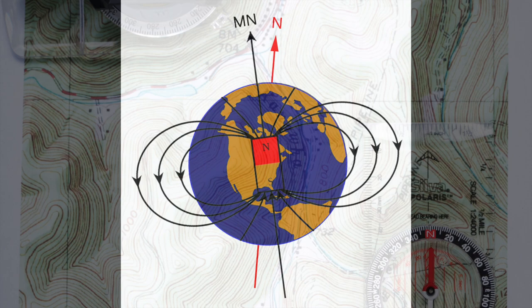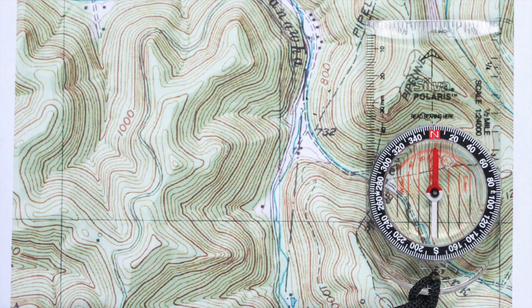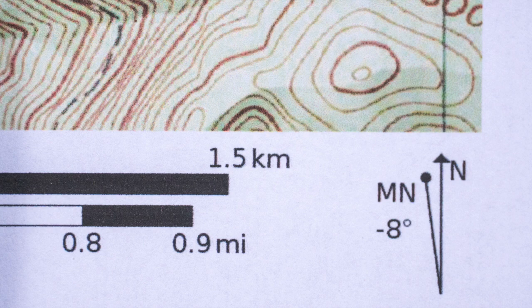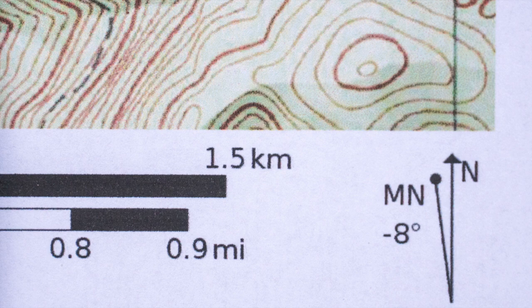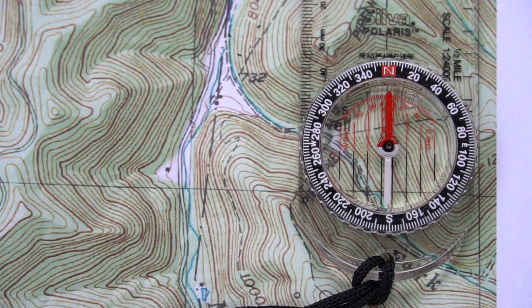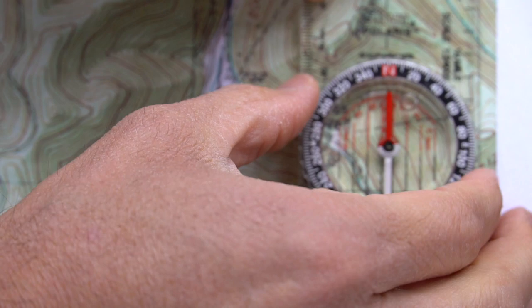So now let's look at how we account for that declination when we're navigating. Picking up where we left off in the last video, we have our map oriented to the terrain with red in the shed, which means our magnetic needle is in line with our orienting arrow. Now look at the declination diagram on your map and notice which side of true north magnetic north is on. On my map, magnetic north is to the left or west of true north. Also notice how many degrees of declination there are — on my map it's eight. So since my magnetic declination is eight degrees westerly, I'm going to rotate my compass bezel in that same direction, eight degrees.